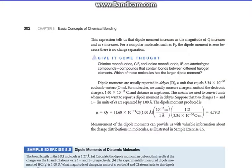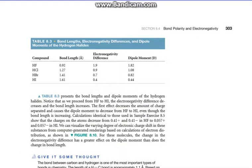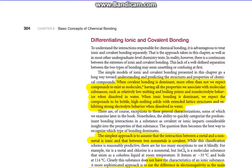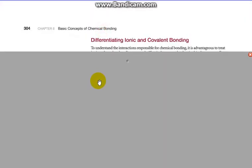We're going to skip the next two pages, not worry about those calculations, which leads us to the last page for this section, differentiating between ionic and covalent bonding.